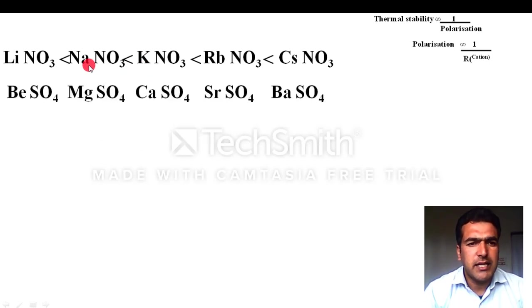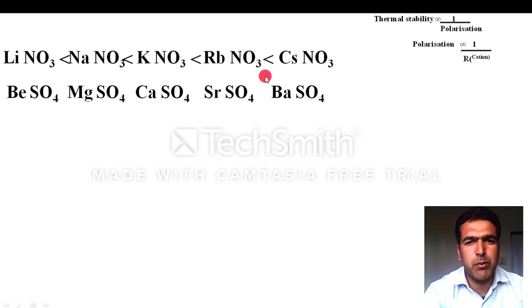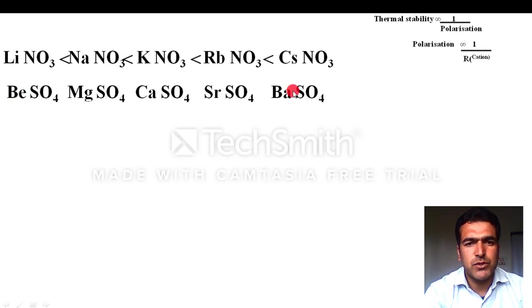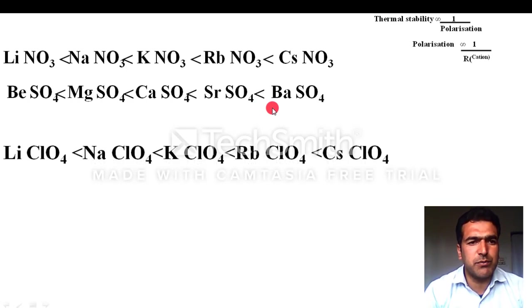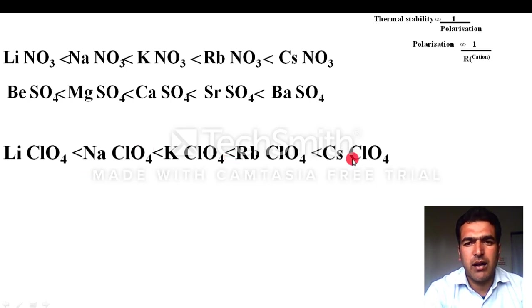If you have a question: write the thermal stability order of sulfates of Group 2 — beryllium sulfate, magnesium sulfate, calcium sulfate, strontium sulfate, and barium sulfate. Sulfate is a polyatomic anion. As you move from beryllium to barium, cation size increases, polarizing power decreases, polarization decreases, and thermal stability increases. The order is: BaSO4 > SrSO4 > CaSO4 > MgSO4 > BeSO4.